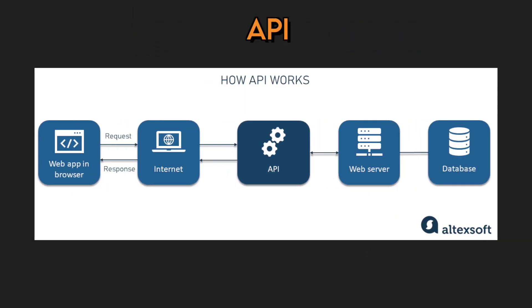Web scraping is cool and all, and maybe it makes you feel like a hacker, but most big companies won't let you scrape their website to build models. You'll need to collect the data in a cleaner, more legal way. One way is through APIs. You should definitely learn how to use APIs to grab data. Almost all companies have APIs for external and internal use — it's the standard way of moving data around.